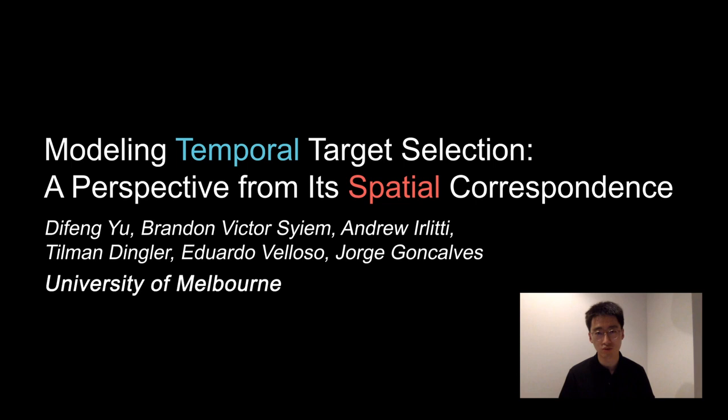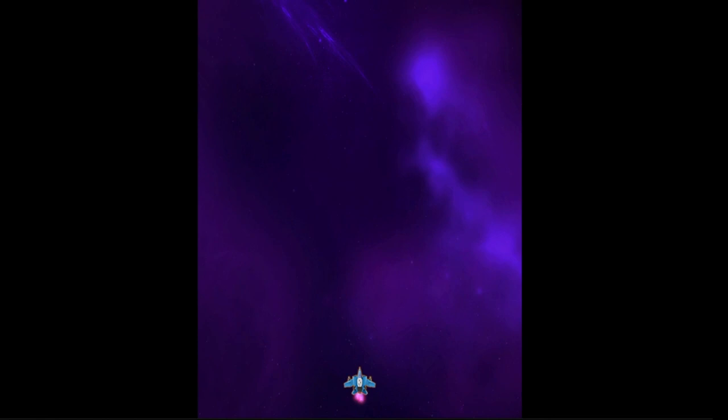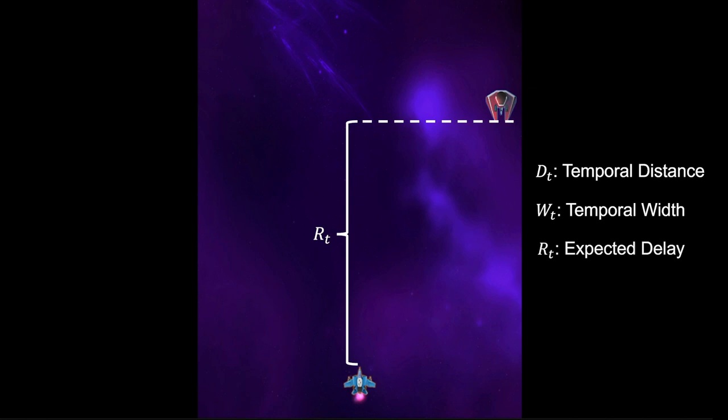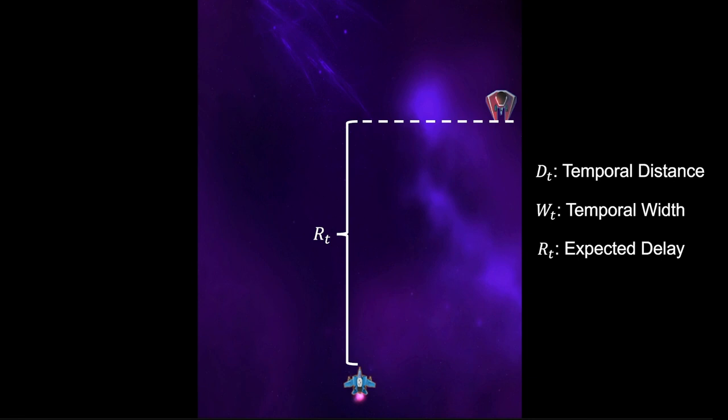Let's first try to decompose the task. Imagine the player in a space shooter game fires a bullet when the target is about to reach across here. So the player must anticipate when the target will reach across here based on its movement, and trigger the selection within a certain time period for the bullet to hit the target. The bullet needs to travel for a certain time to reach the target, so the player must estimate its travel time based on previous experiences and take this delay into account to trigger the selection earlier.